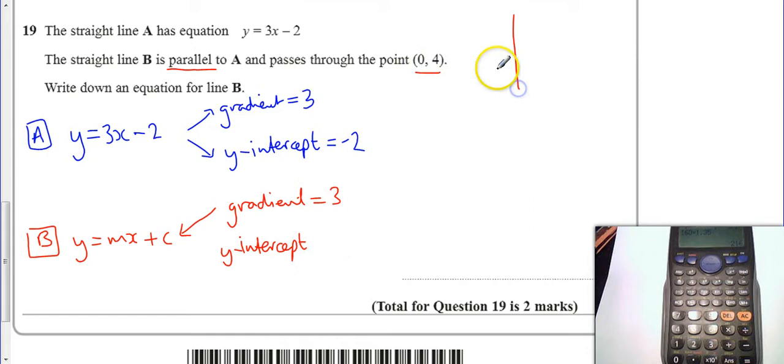Same thing with the y-intercept. I'm told here that if I was given a set of axes, 0 along and 4 up, so my y-intercept must be 4. Plus 4, and I can feed that into my equation. So therefore, the equation of line B is very simply y equals 3x plus 4.